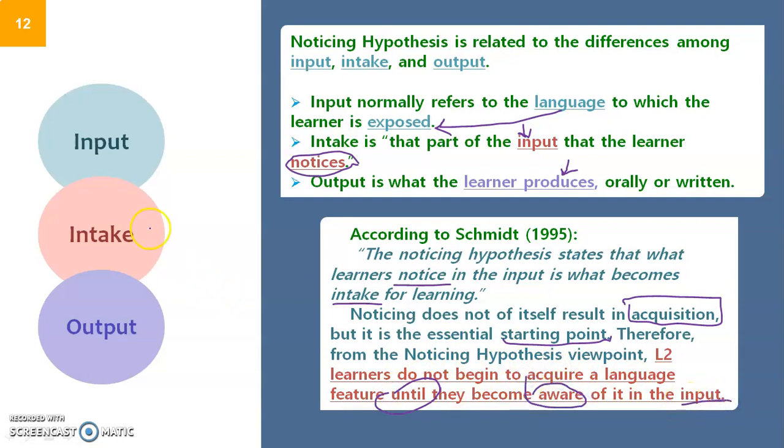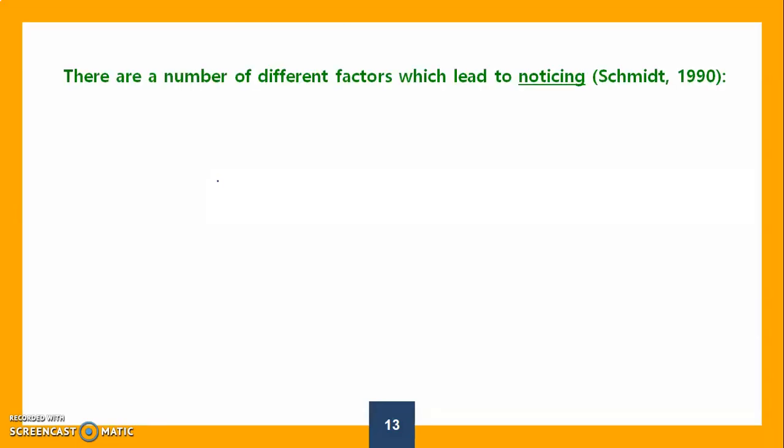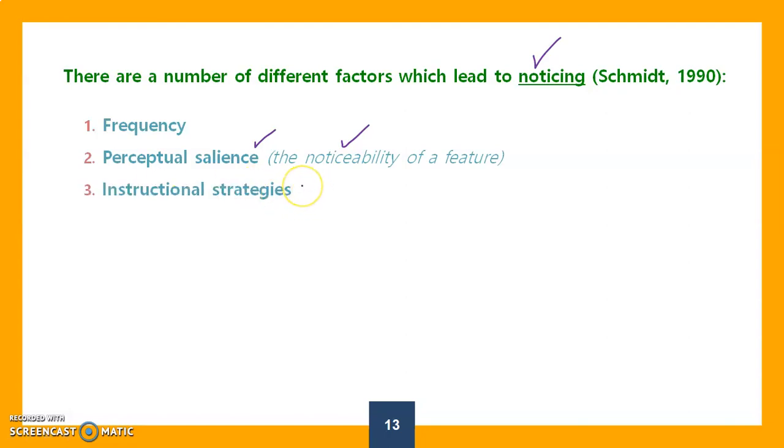L2 learners do not begin to acquire a language until they become fully aware and conscious of the input so that it becomes intake. There are many factors that lead to noticing. Learners don't always notice language features. Students should pass through factors which affect noticing: frequency (how many times the linguistic feature is repeated), perceptual salience (how clear or noticeable the feature is to be perceived), and engaging the mind of the learner.